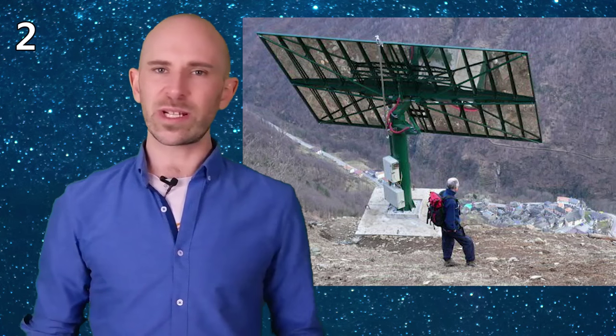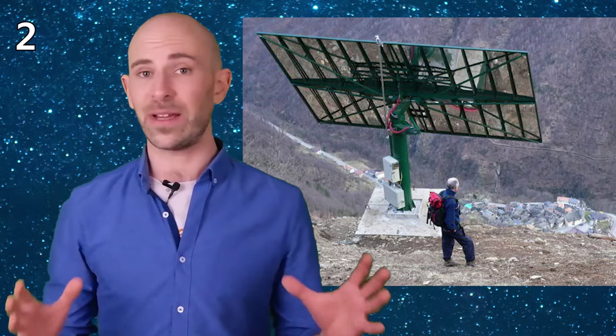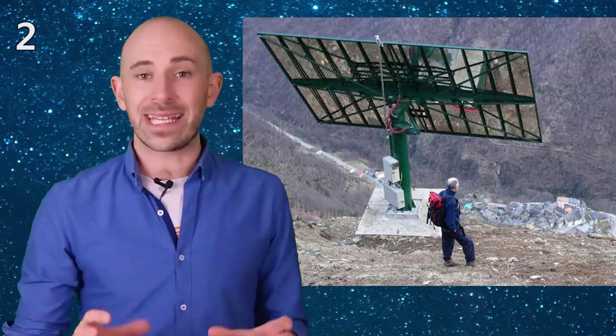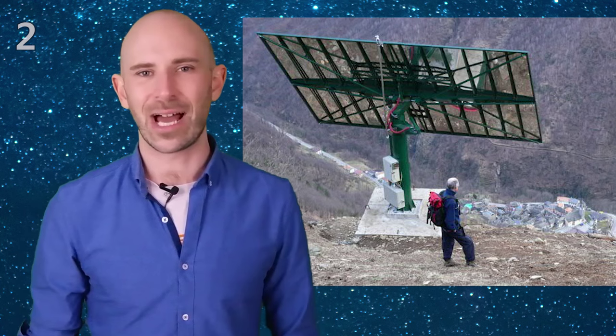Number 2. The Italian town of Viganella gets no direct sunlight for about seven weeks each winter. In order to solve this problem, in 2006 a computer-controlled mirror was installed which is approximately 25 feet by 15 feet. The mirror is controlled such that it reflects sunlight into the town's main city square during the daytime.